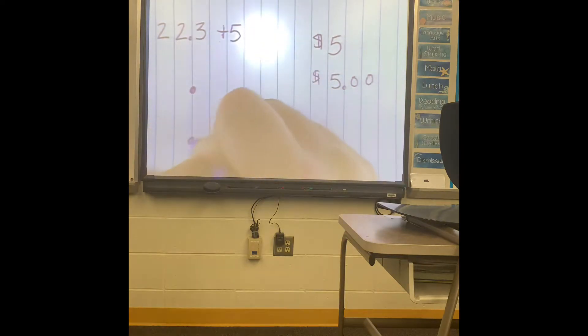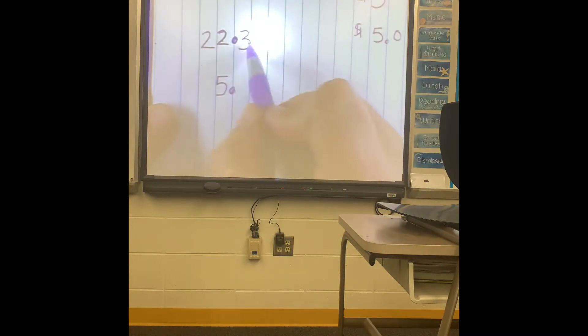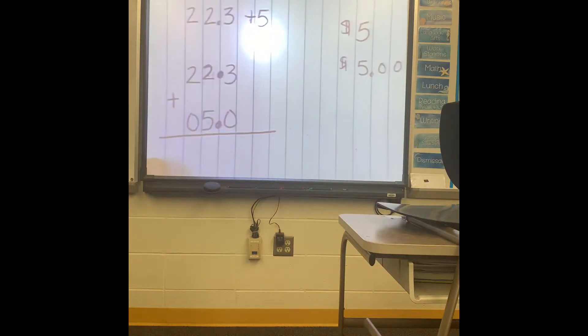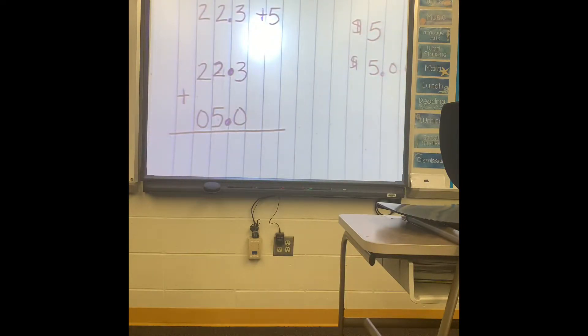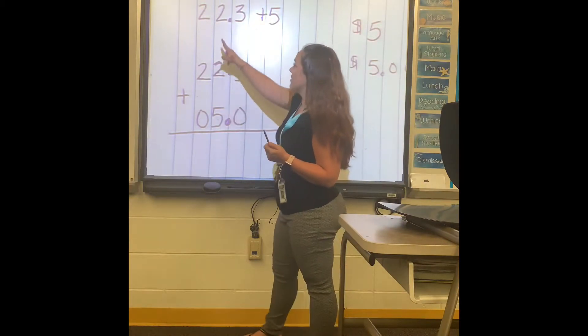So put your decimals down first. Now this is 22 and then a 3, and then this is 5. So you have 22.3 and then 5. There is a lot of numbers missing here. So every number has to have a partner. So this would be almost like saying $22.30, and this would be like saying $5.